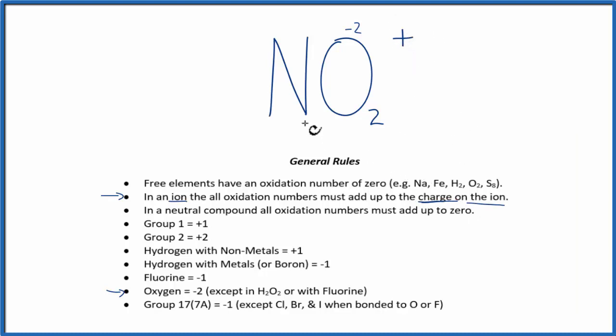So we can think of it this way. We don't know the nitrogen, but we do know 2 times negative 2. That's a minus 4 for the oxygens, and all of that has to equal a positive 1.